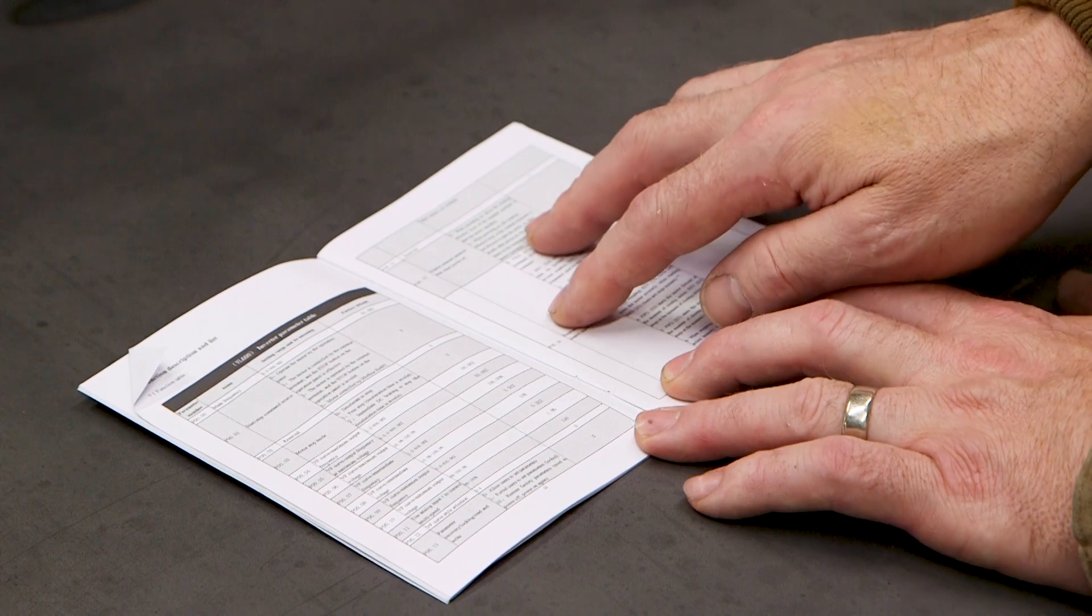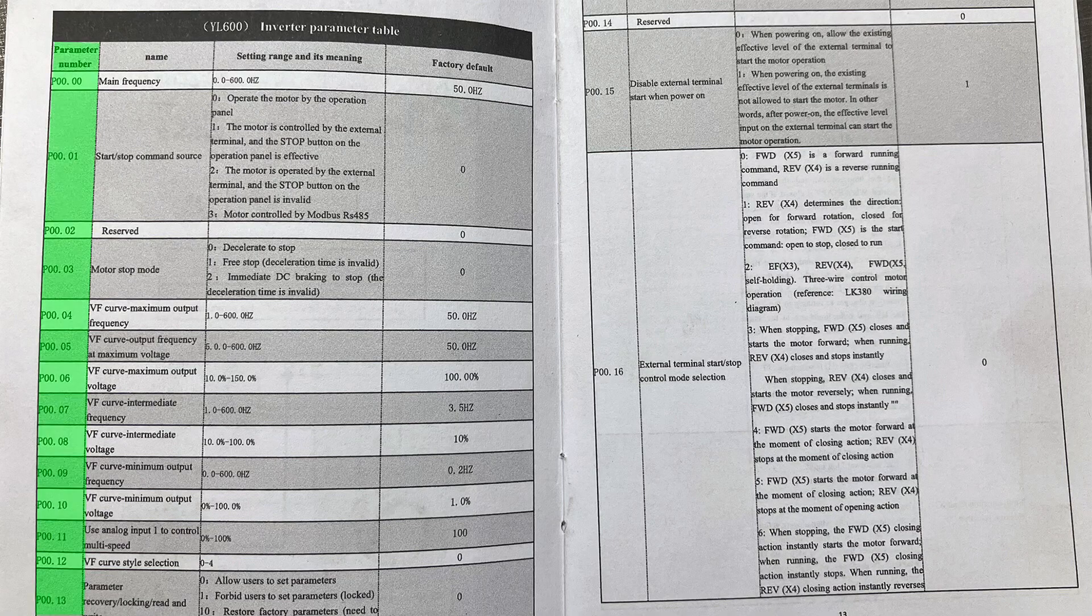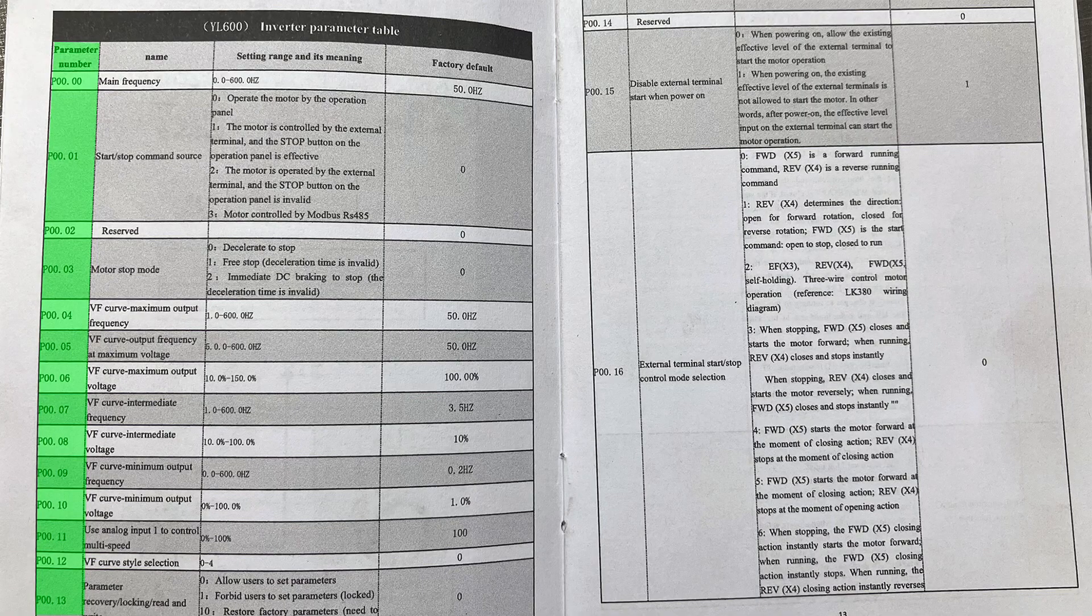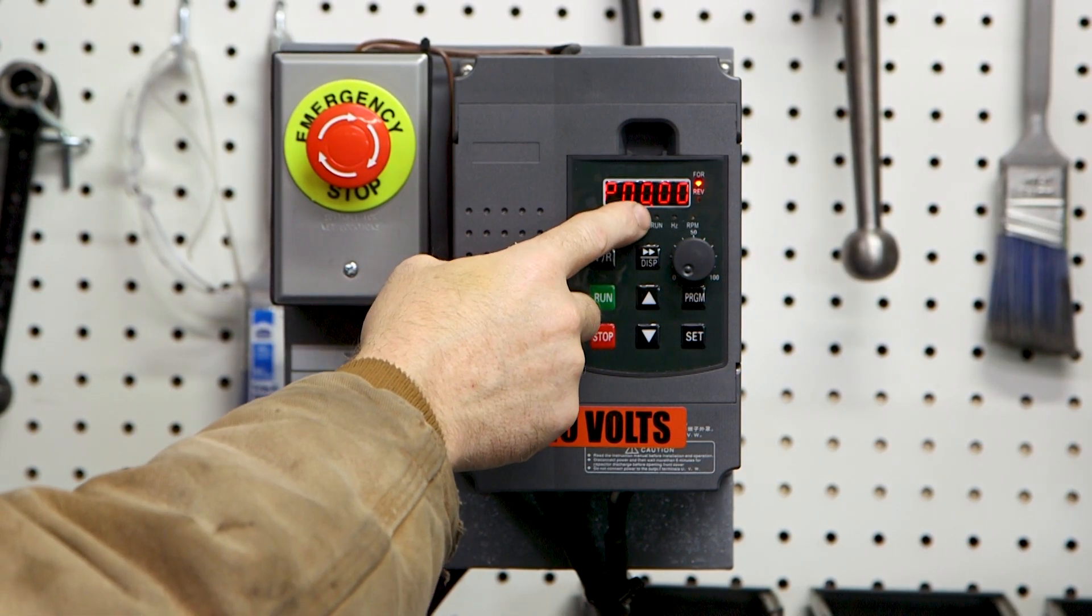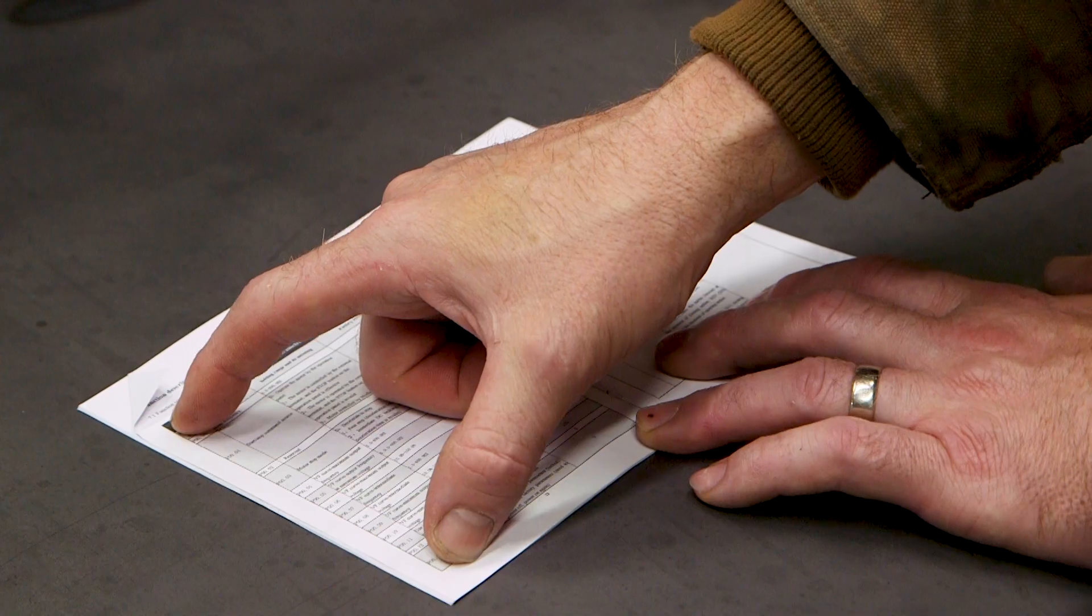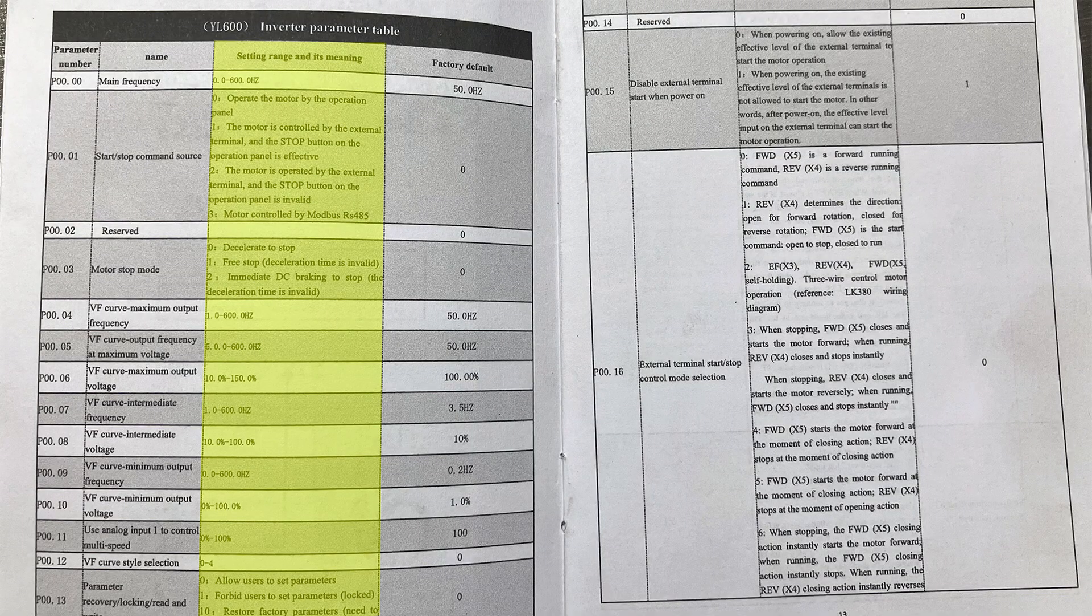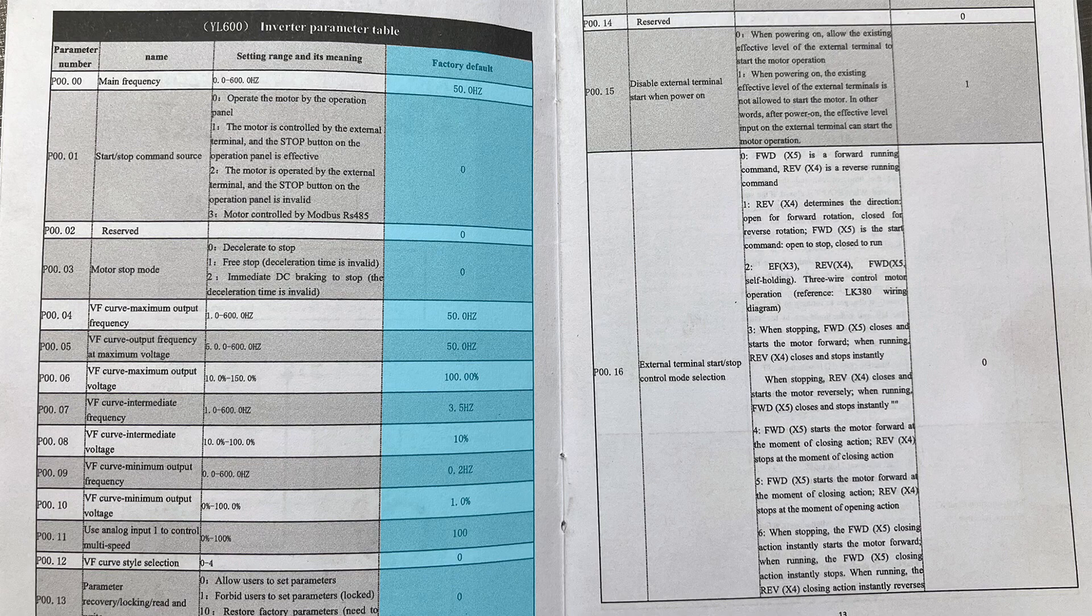It's got four columns. The first column is the parameter number or what on the VFD is P. So the first one I show you will be P0000. The second column is a description of what that parameter changes or what it is. The third is a range that that parameter can be set to and the fourth is what it was set to when it left the factory.